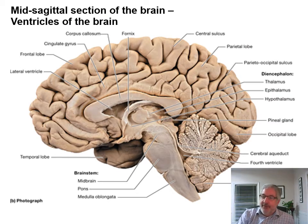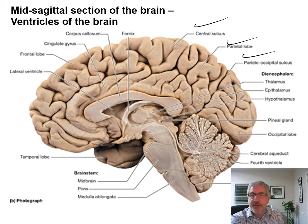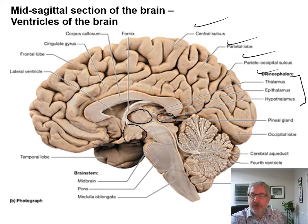Now we're going to talk about holes in your brain — they're called ventricles. Here are all the pieces you know now: central sulcus, parietal lobe, parieto-occipital sulcus, diencephalon with thalamus, epithalamus, and hypothalamus. There's the thalamus, hypothalamus, epithalamus, and the pineal gland sticking off the back. We have the brain stem: the midbrain area, the pons, and the medulla oblongata. And then the cerebellum, frontal lobe, corpus callosum, fornix, and temporal lobe.